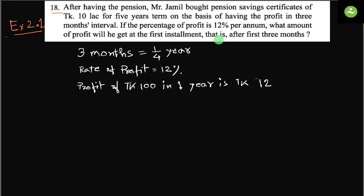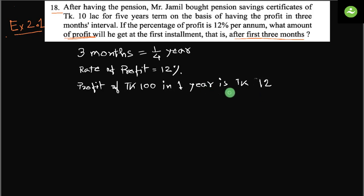If the percentage of profit is 12% per annum, what amount of profit will he get at the first installment, that is after the first three months? We have to find out the amount of profit he gets after three months. Though the math looks very big, it is actually very simple. Three months means one-fourth year. Rate of profit 12% means profit of Taka 100 in one year is Taka 12. We put profit on the right side and the principal and year on the left.